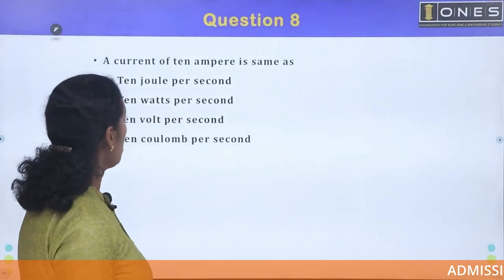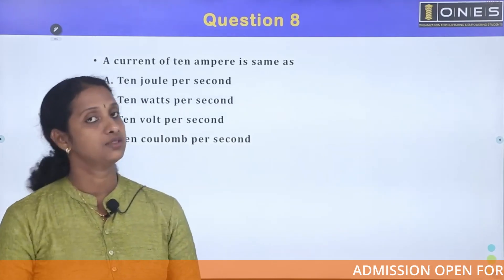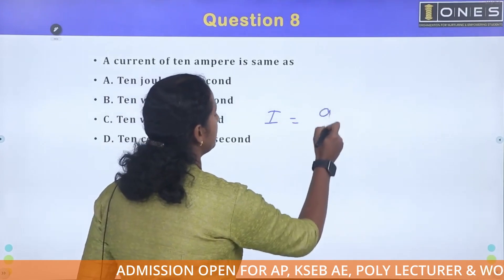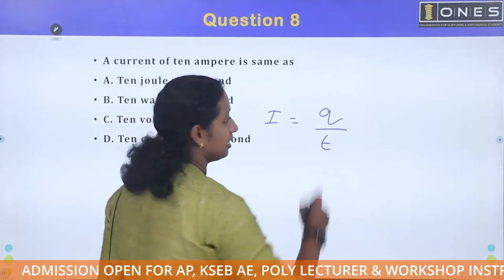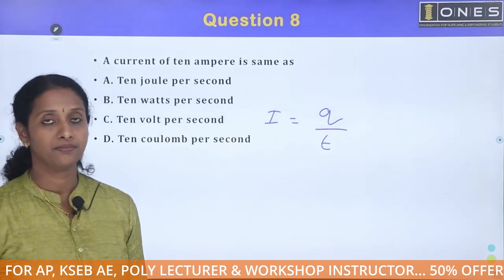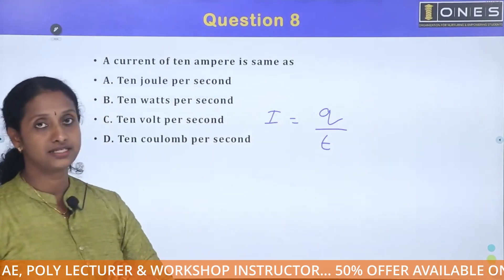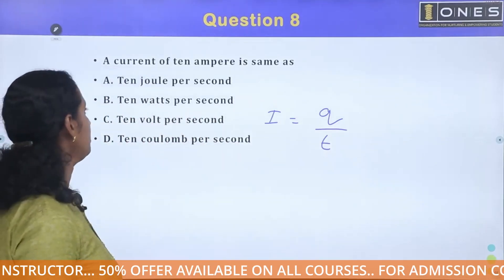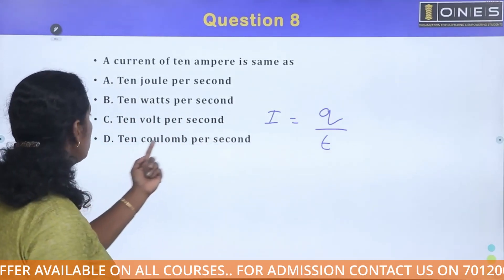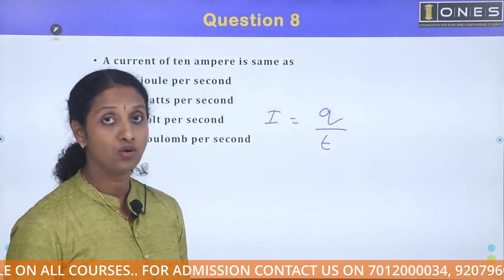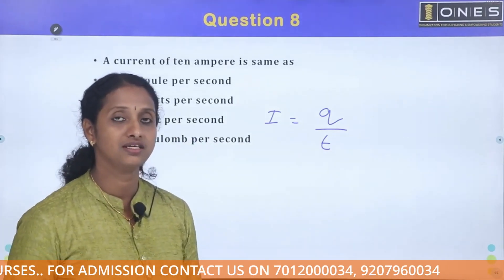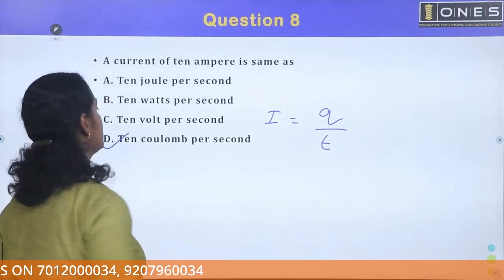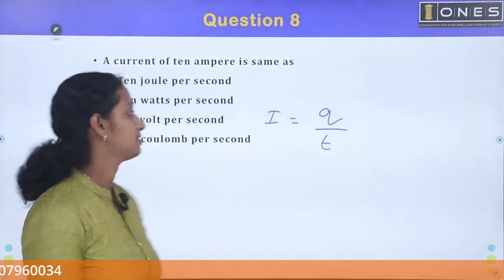The current of 10 ampere is the same as what? Ampere is the same as Q by T — charge divided by time. The charging unit is the coulomb. So 10 amperes equals 10 coulombs per second. Option D is the correct answer.